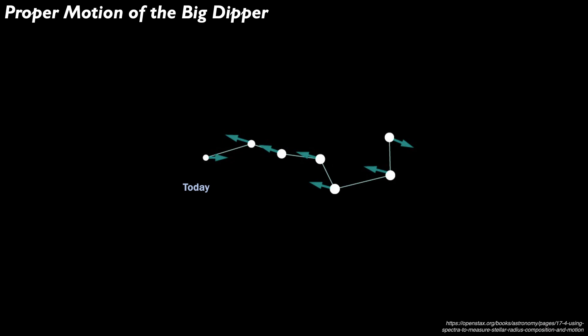Today, it looks like this and is one of the more recognizable shapes in the sky. These arrows represent the proper motions of the individual stars of the Big Dipper. The direction of the arrow implies the direction the star is moving, and the size of the arrow represents the rate of proper motion of each star.